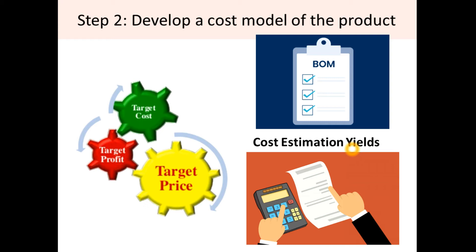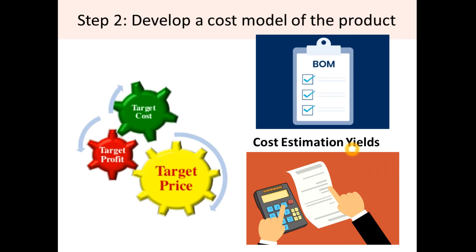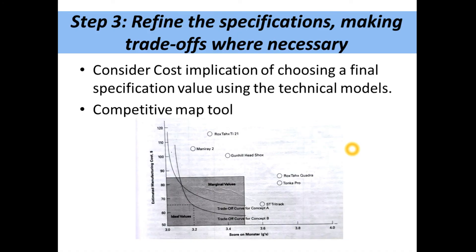Cost estimation yields means that when manufacturing a product, there are many companies offering the same components with different specifications. We compare all available components in the market to analyze which is suitable for our specification at the least possible cost. This is called cost estimation yield — finding where we can get required components at the best price so we can sell the product at a better price and earn more profit.